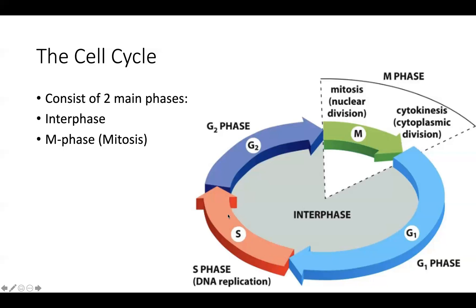S phase is a period of synthesis — something is being created. This is where our DNA is being duplicated. The goal of mitosis is to generate a new copy of the cell, so we've got to duplicate what's already present — in the human, that's 46 chromosomes. Then we go to gap phase two, a short checkpoint to make sure things have happened correctly and whether the cell should continue into mitosis.